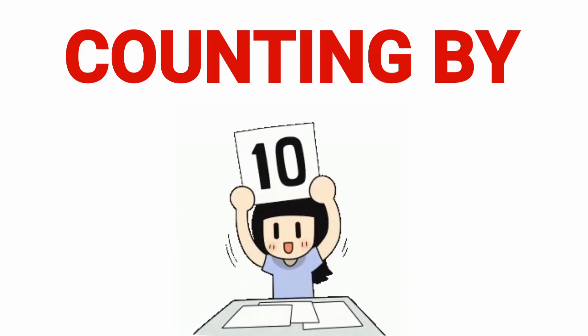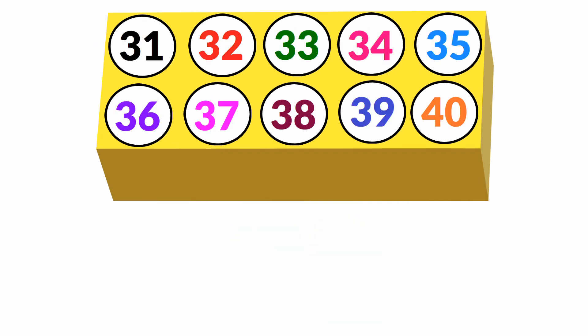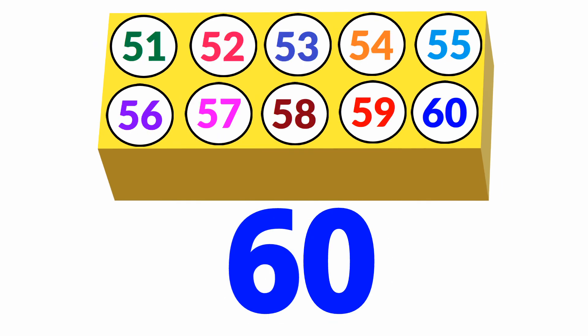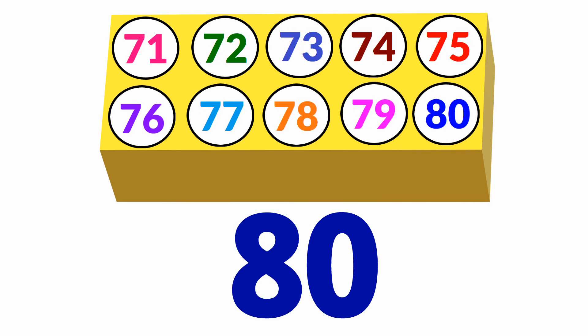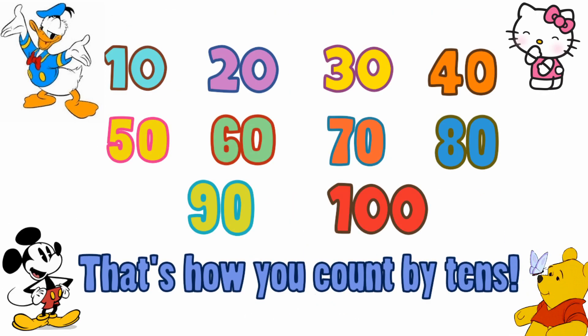Counting by tens. 10, 20, 30, 40, 50, 60, 70, 80, 90, 100. That's how you count by tens.